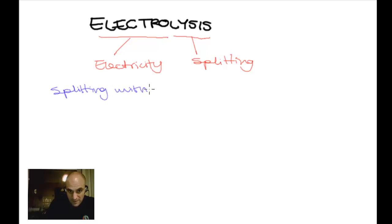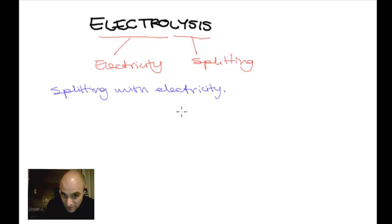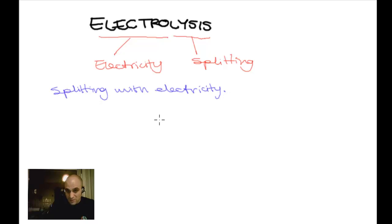A very famous British scientist, Sir Michael Faraday, was one of the pioneers of electrolysis. For the C3 controlled assessment in 2012, when you get to the A* stuff, you'll be looking into some of Faraday's laws of electrolysis, because they relate current with the amount of substance made.